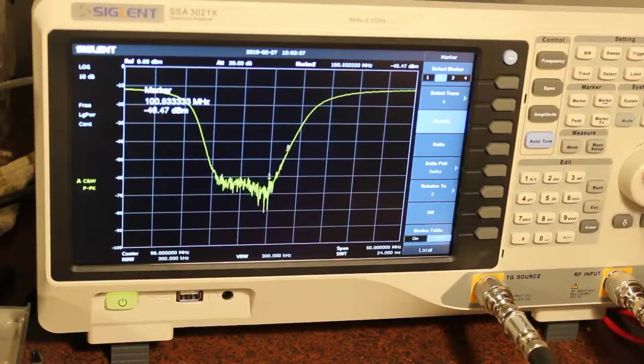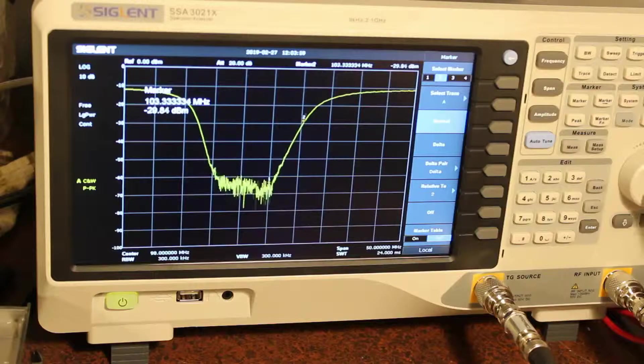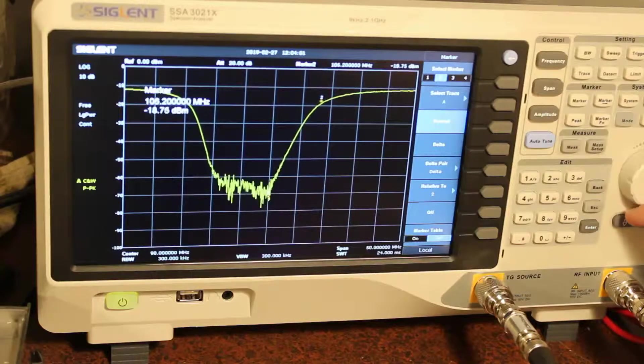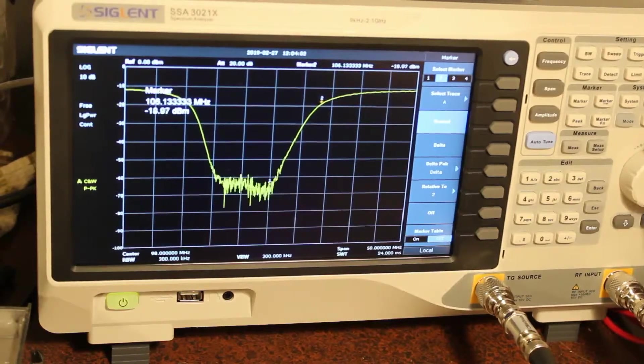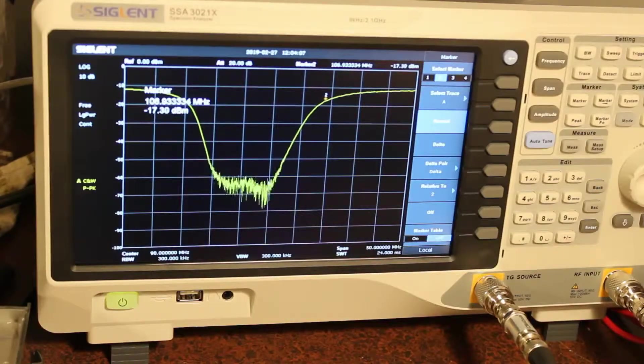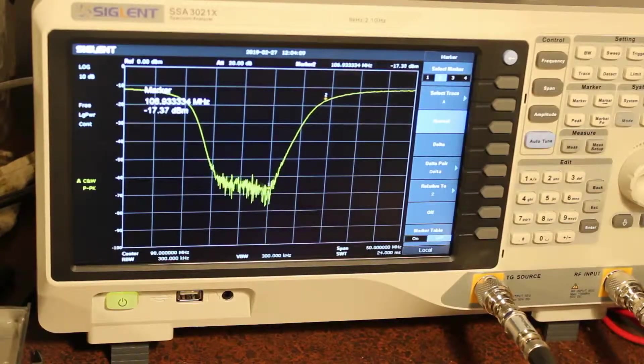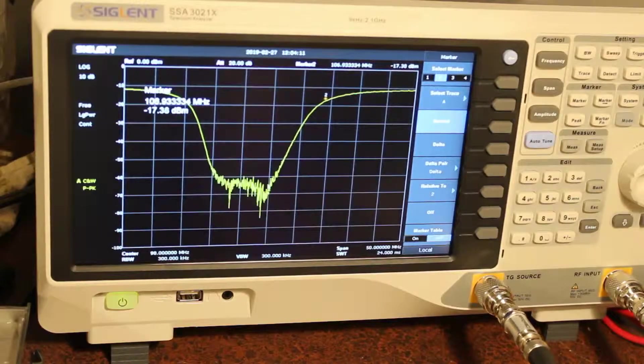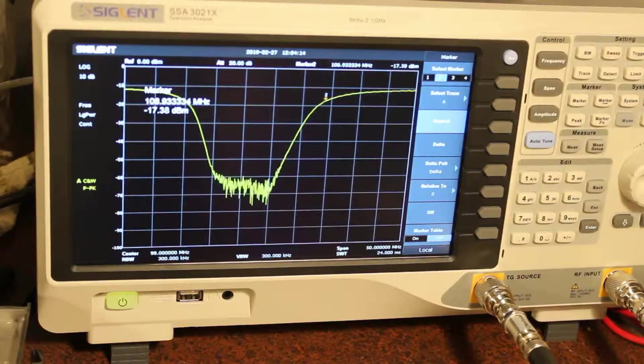However, it doesn't really extend all that high. So when you start to get into the top end of the band, for instance, in my town here, at 106.9, there is a low power FM station, and really they would only be attenuated by about 7 dB. Not perfect, if you ask me, but at least it would be something.